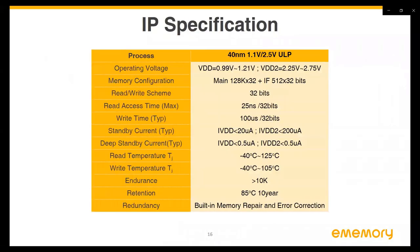Here we list an RRAM IP spec example at a 40 nanometer ultra-low-power process. In its current stage, the memory density is 4 megabit in the main memory bank plus one 16Kbit information block. The read speed is 25 nanoseconds and the typical write speed is 100 microseconds. The maximum operating temperature is 105°C. The maximum endurance is 10k cycles and data retention is 85°C for 10 years. It is also built with in-chip repair and error detection and correction functions.